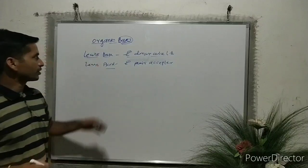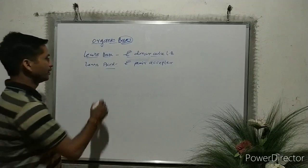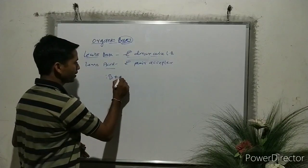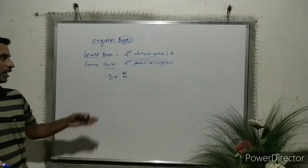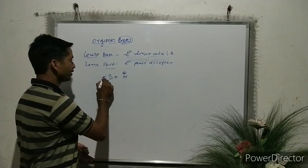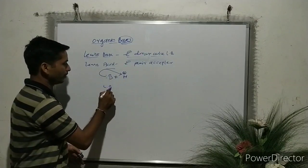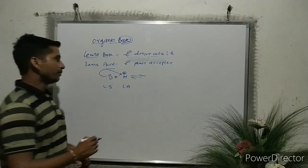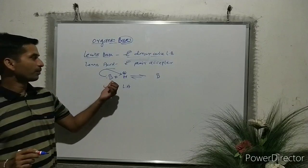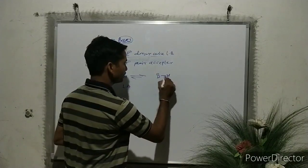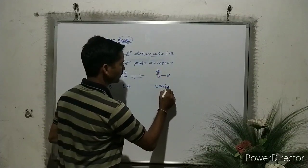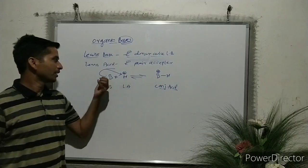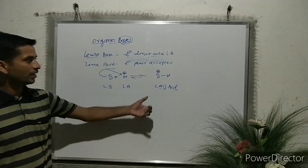To study organic bases, let's take a general reaction. When a base having a lone pair of electrons is reacted with H⁺, it donates its lone pair to the H⁺. This base is called a Lewis base and H⁺ is the Lewis acid. This is a reversible reaction with equilibrium. When the base gives its lone pair to H⁺, a conjugate acid is formed, which carries a positive charge because it is now electron deficient.